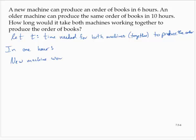would complete one-sixth of the job. Let's just say the order. The new machine can complete one-sixth of the order in one hour. It takes six hours to complete the order, so it should have one-sixth done in one hour.